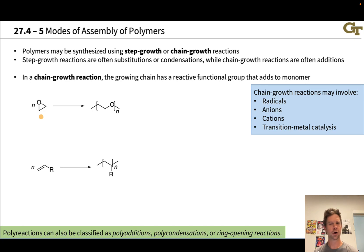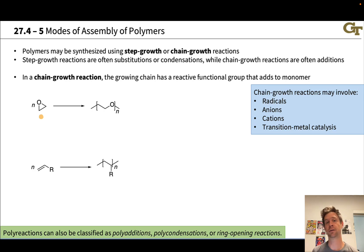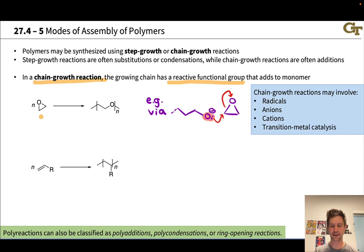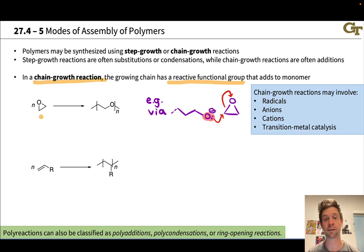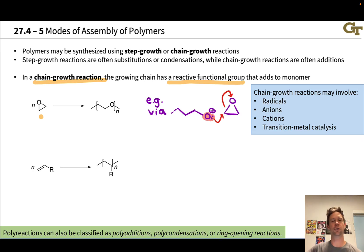Two examples of chain growth reactions are shown here. Chain growth reactions are typically additions and may be nucleophilic or electrophilic additions involving anions or cations, radical additions, or transition metal-catalyzed polyaddition reactions. For example, when the first polymer is made under anionic conditions, an initiator compound creates an anionic oxygen in a monomer molecule, which then adds to another molecule of the epoxide monomer, creating a new anion on the end of the growing chain.